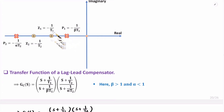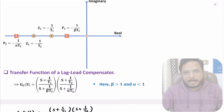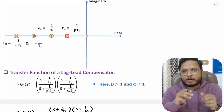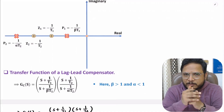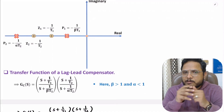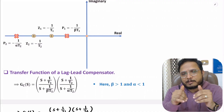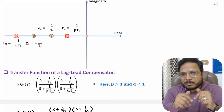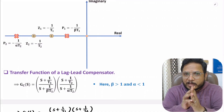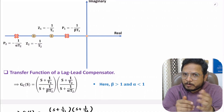This combination is for the lag compensator and the other combination is for the lead compensator. I hope you have enjoyed this video. If any confusion remains, please place it in the comment section — I'll be happy to help. Thank you so much for watching.